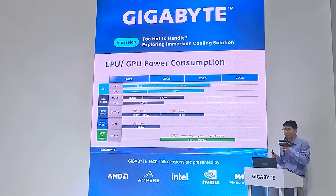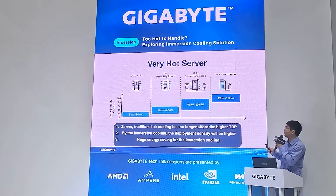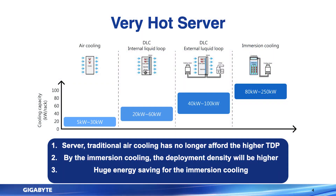With this higher power consumption, we face problems. First, traditional air cooling servers can no longer handle this higher TDP. In this situation, we can use immersion cooling to solve the problem. Second, for cooling capacity, air cooling per rack is normally limited to 30 kilowatts. With immersion cooling, the capacity per tank can easily reach 80 kilowatts — so deployment density is much higher. And most importantly, immersion cooling provides huge energy savings.